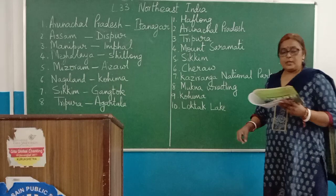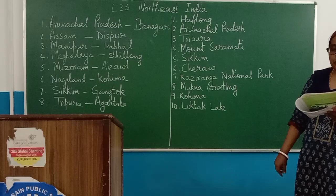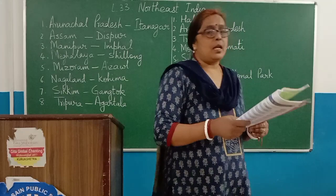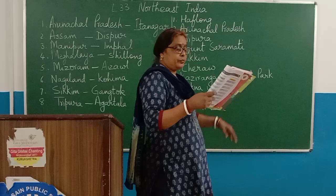Which national park in Assam is famous for the one-horned rhinoceros? The famous national park in Assam famous for the one-horned rhinoceros is Kaziranga National Park.